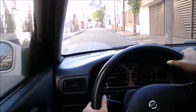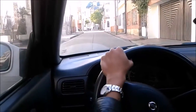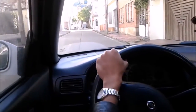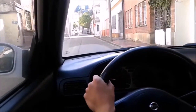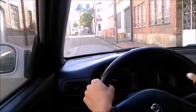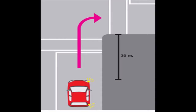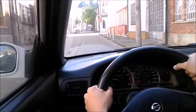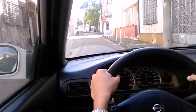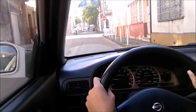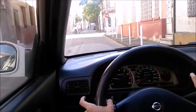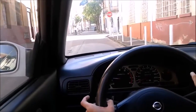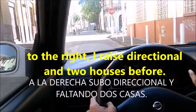Therefore we need to remove it ourselves. When we turn either to the left or to the right, we must signal about 20 or 30 meters before reaching the corner. To have a point of reference, we can start signaling two houses before reaching the corner to put our directional light on.